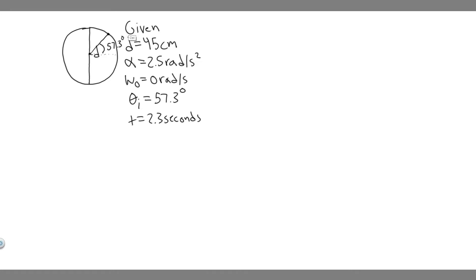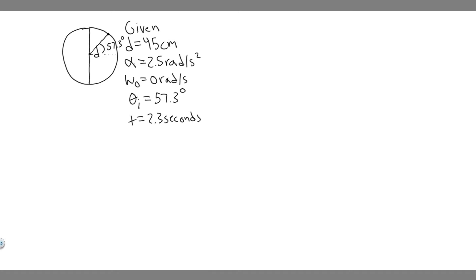So imagine this right here is our wheel. The first thing you always want to do is write down the given information. The diameter of the wheel is 45 centimeters. The constant angular acceleration alpha is 2.5 radians per second squared. The initial angular velocity is zero radians per second because it starts from rest. The initial angle theta is 57.3 degrees, and the time interval we're solving for is t equals 2.3 seconds.